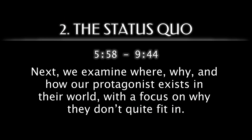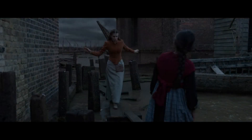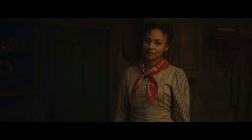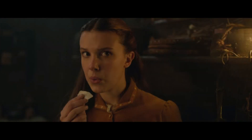Next, we examine where, why, and how our protagonist exists in their world, with a focus on why they don't quite fit in. Enola's privileged upbringing contrasts against how the other half lives, and she's even discounted by her fellow women who see her as an outsider, while she takes in a handful of random clues toward the overall mystery.